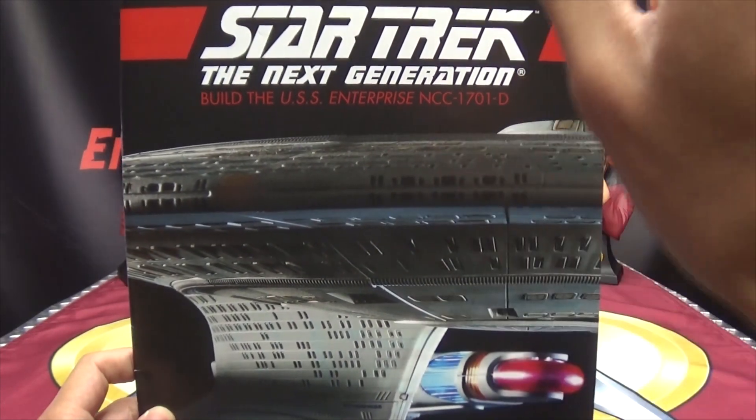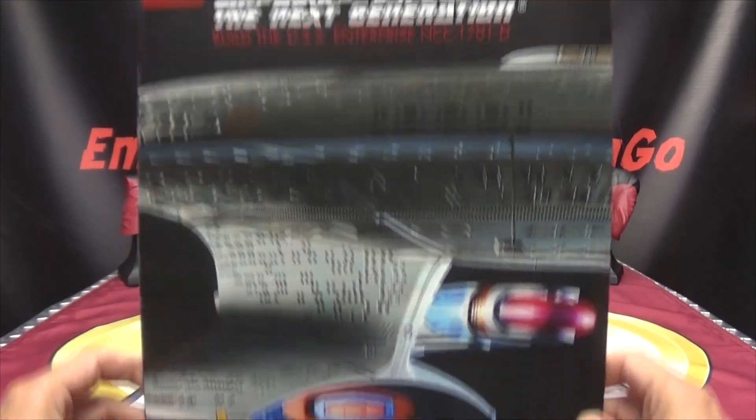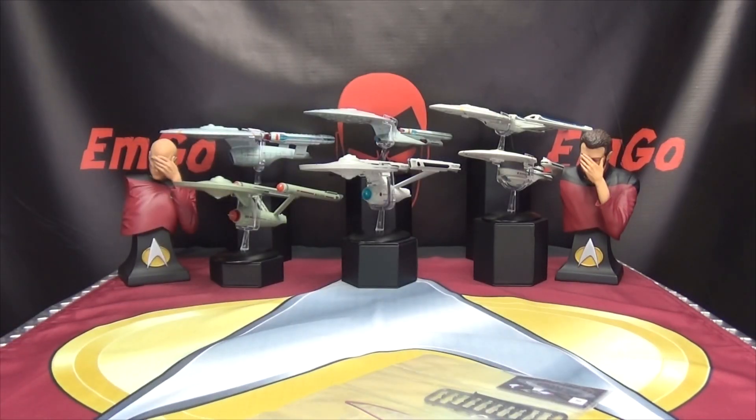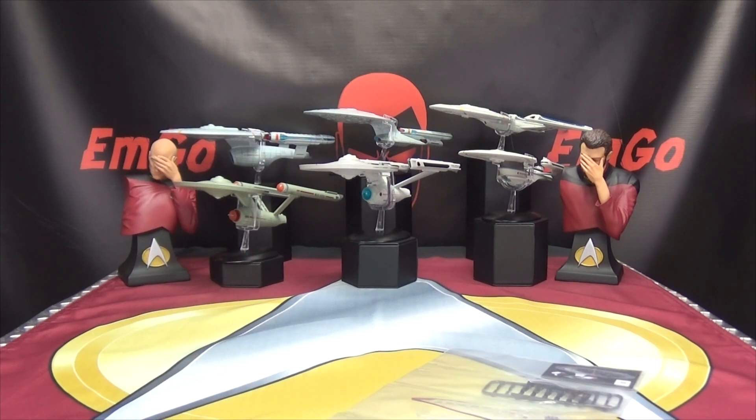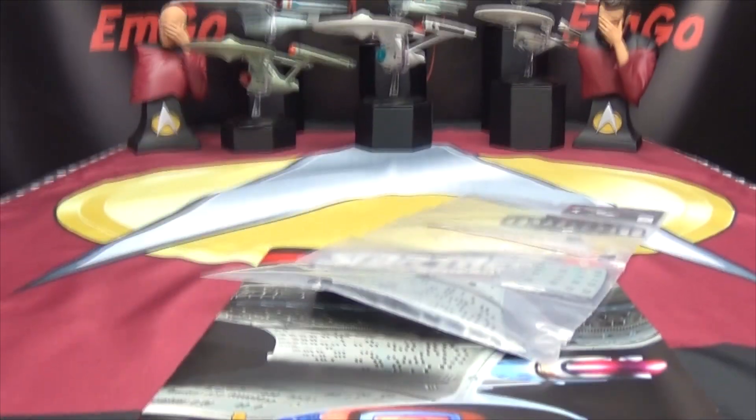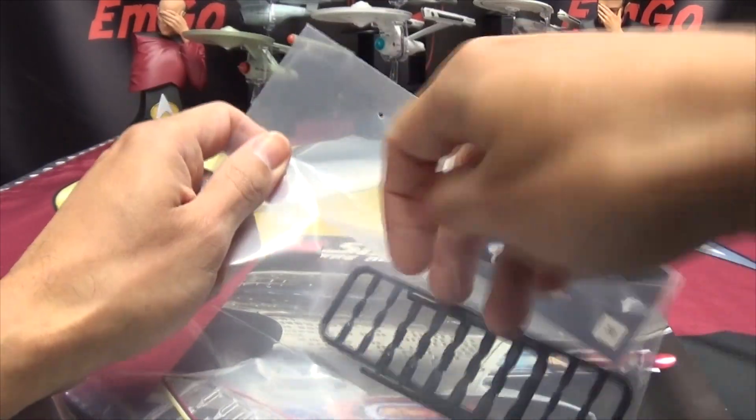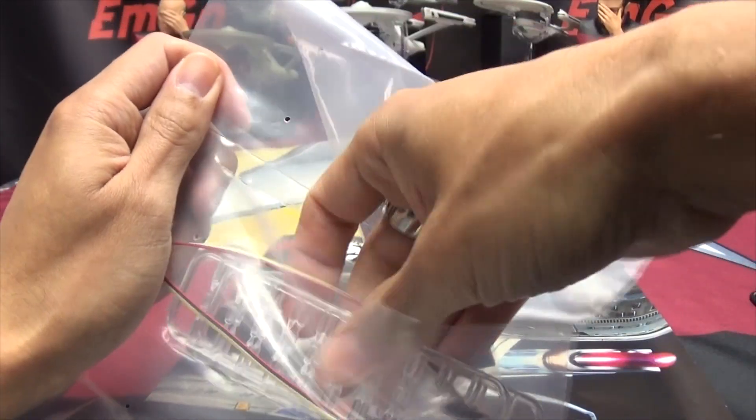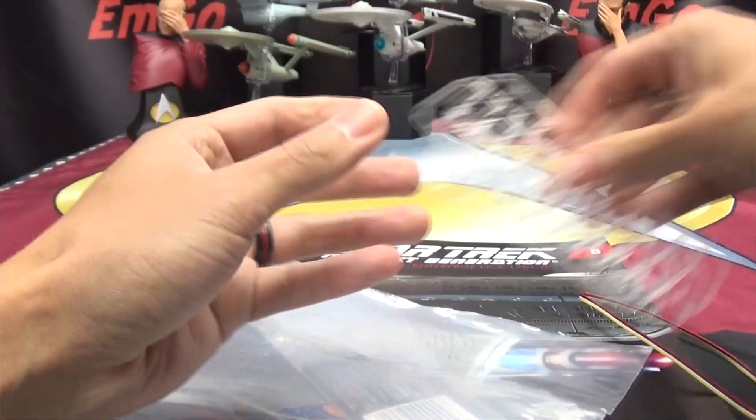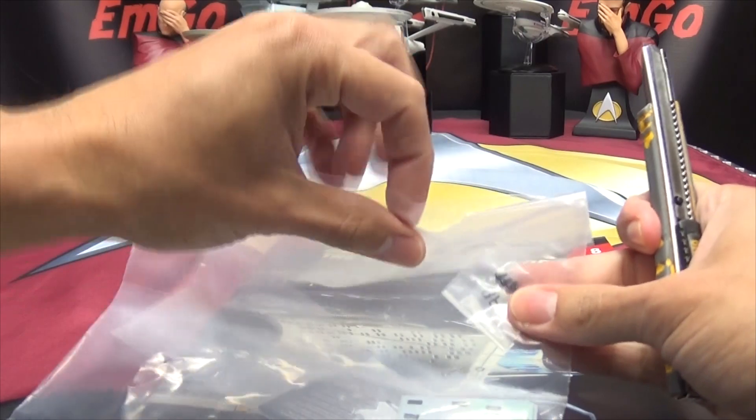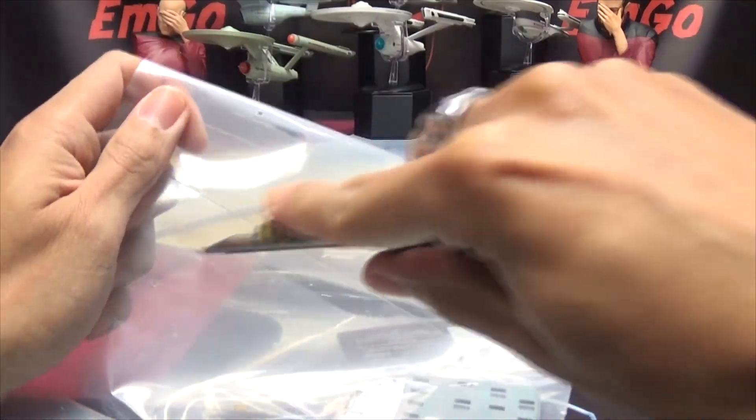We're still on issue number eight, this is the fourth and final assembly of issue eight. So here we have the magazine, here we have our parts. Let's engage because there ain't nothing to it but to engage it. What do we have here? Windows. More windows, more lights. Yes, lots of lights. We have another panel here and another bit of the neck region.